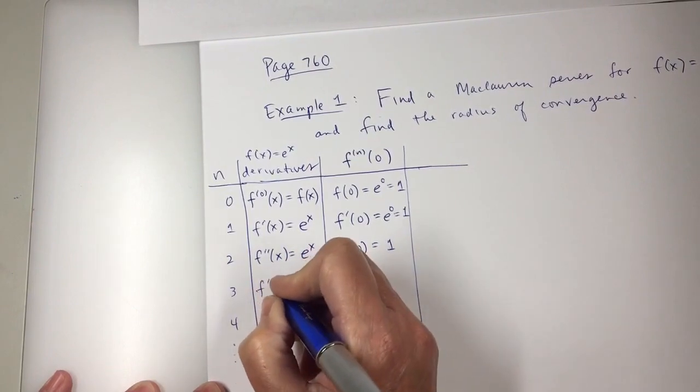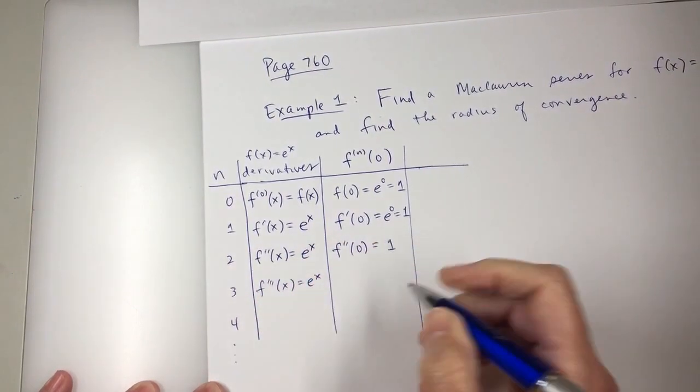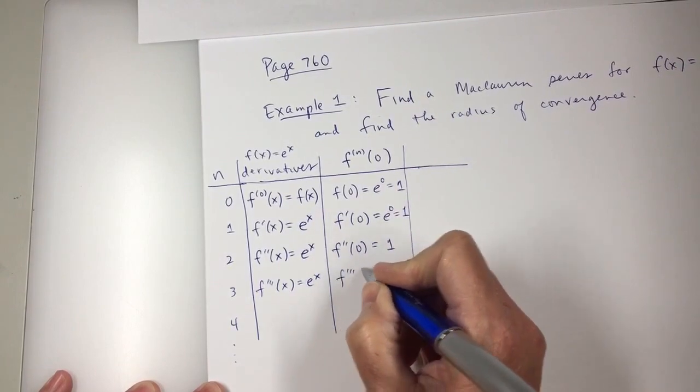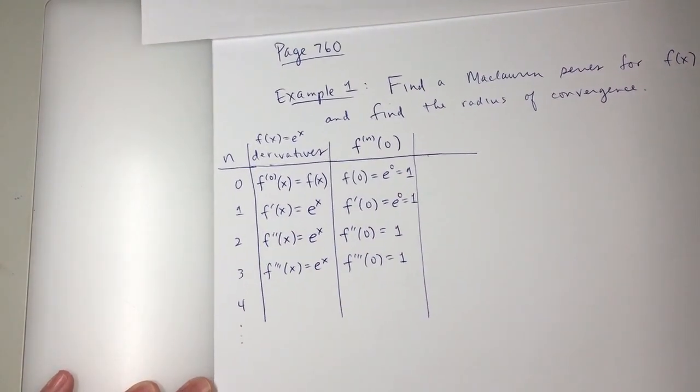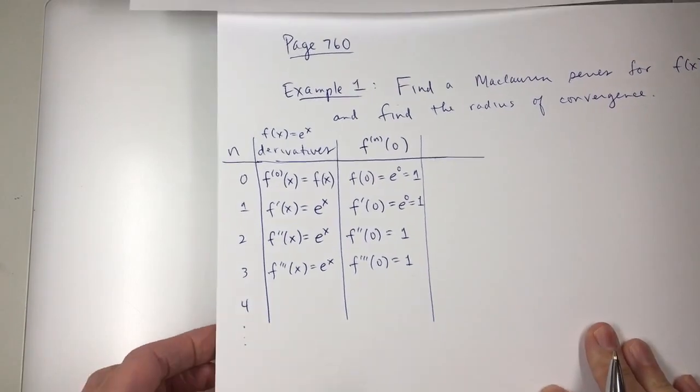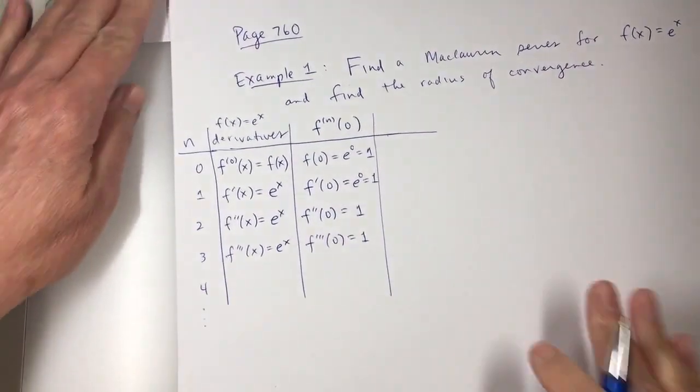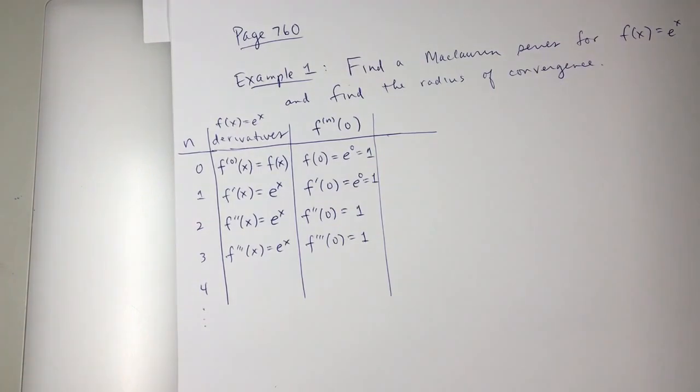f triple prime at x is e to the x. So the third derivative at zero is 1. I think I'm ready to write out the Maclaurin series for this problem.